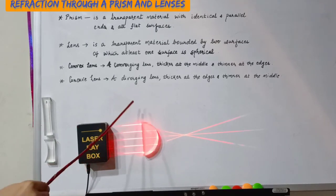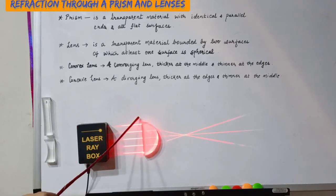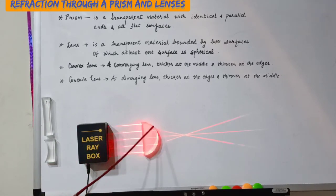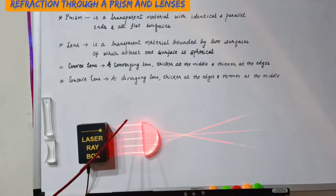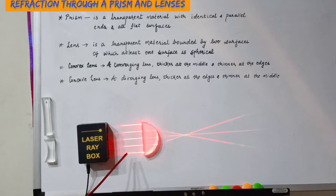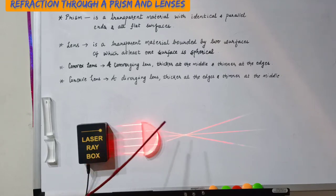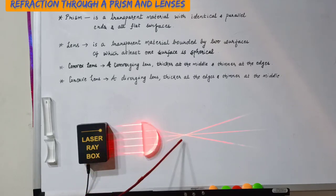One surface of this lens is plane and the other surface is convex, so this is a plano-convex lens. In the case of a plano-convex lens, parallel rays of light after refraction meet at a point called the focus of this lens.